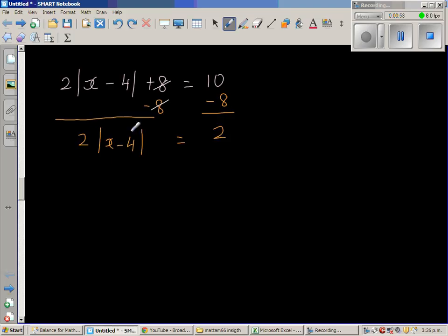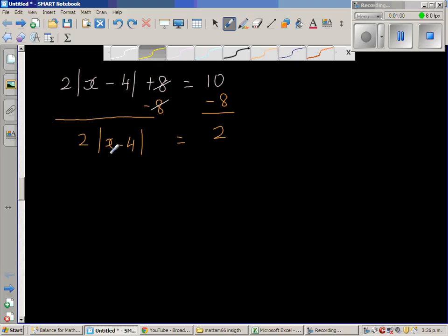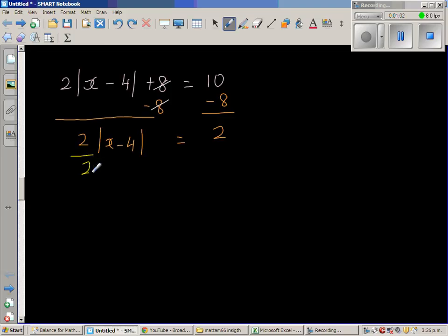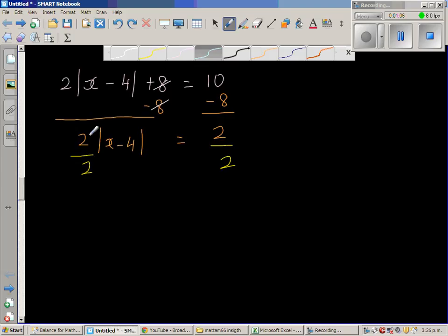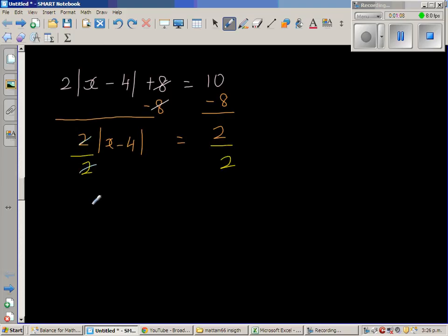Now you've got to get rid of this 2. So what I'm going to do is divide this side by 2. So I'll also divide this side by 2. So what happens is this and this gets cancelled. So modulus of x minus 4 is equal to 1.